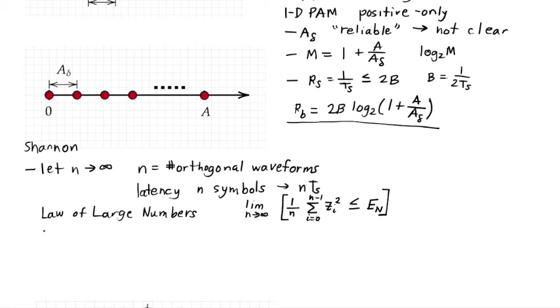It also says that now, remember Z sub I is the noise, it's what I measure minus the symbol I was trying to send squared. It's now less than square root of little N times E sub N. It's essentially in a ball. This is the distance from the measurement to the sent symbol. It is a sphere, a hypersphere in N dimensions.